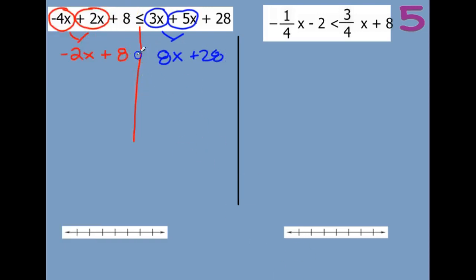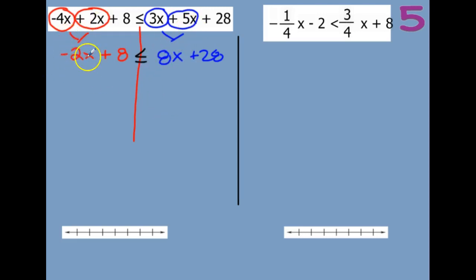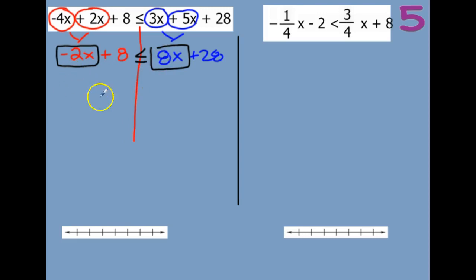So now I'm going to put my symbol back in the middle — all we did was simplify both sides. We need to get all of our x's on the same side. I have a negative 2x here and an 8x here — it doesn't really matter which side you move them to.